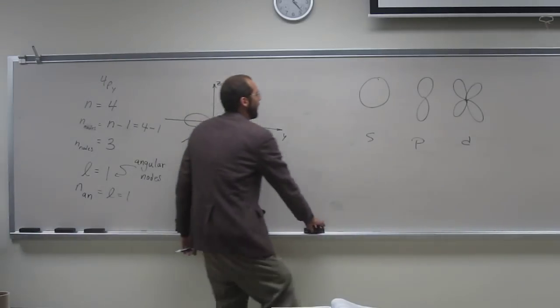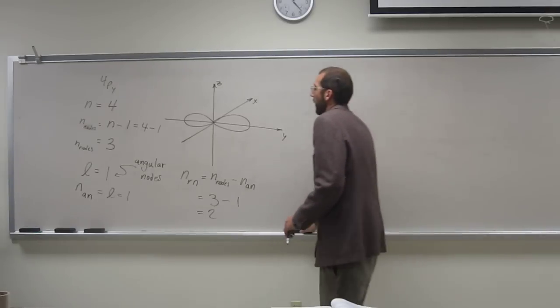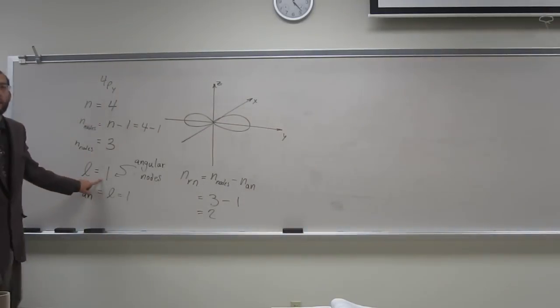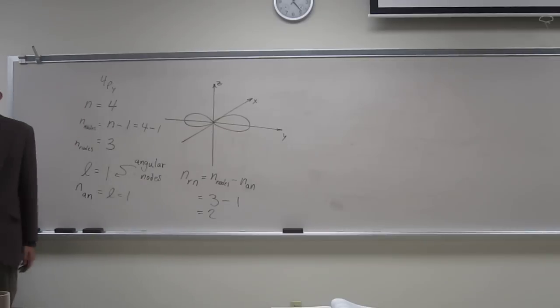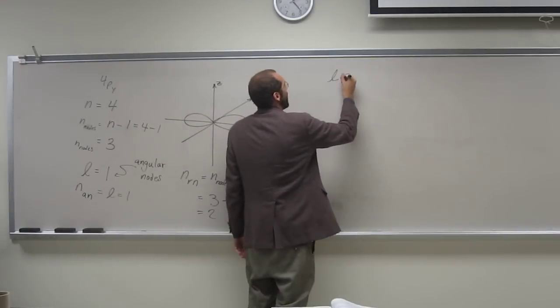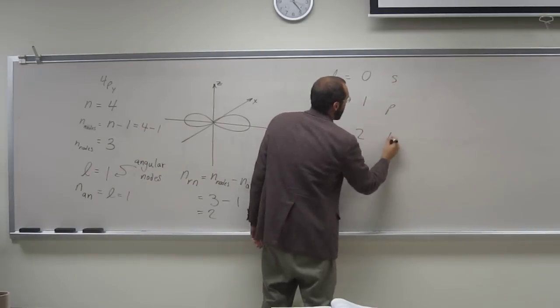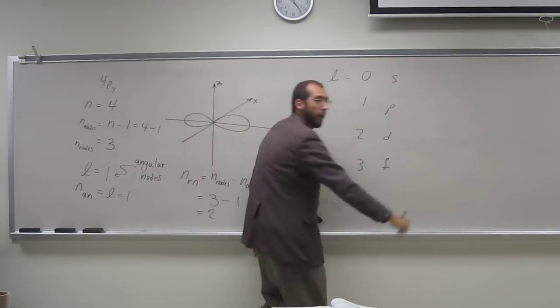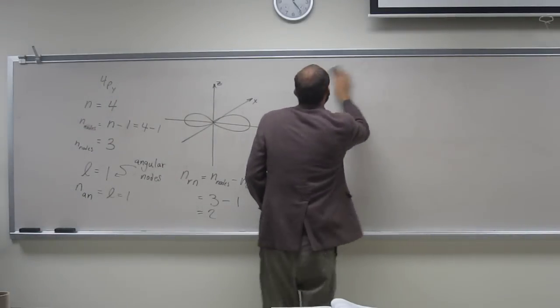So let's kind of blow this up a little bit. [Student asks: And how do you find the angular nodes?] Angular nodes is the same as L. How do you find L, I guess? L is the quantum number, the second quantum number. So every P is 1. L is 0 for S, 1 for P, 2 for D, 3 for F, you know that, right?